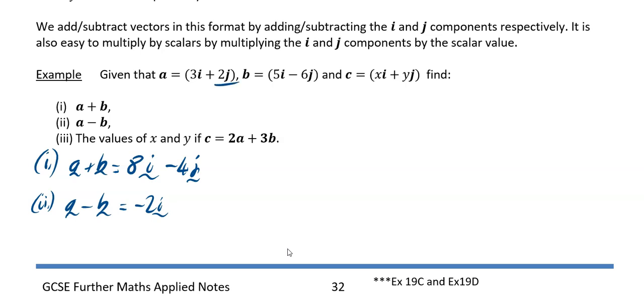Then for the j parts, you've got 2j minus minus 6j, so 2j minus minus 6j is 2j plus 6j which is plus 8j.